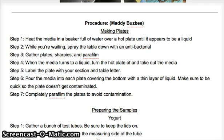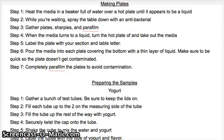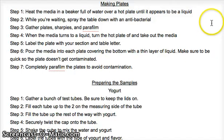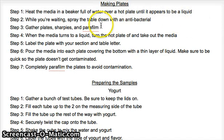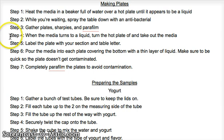For the procedure, we'd start with making our plates. We'd heat the media in a beaker and put it on a hot plate and wait until it appears to be a liquid. While you're waiting, you sterilize your environment, wash your hands, and clean the table with antibacterial. You gather the plates, the sharpies, and whatever materials you need. When the media turns to liquid, you turn the hot plates off and take out the media.